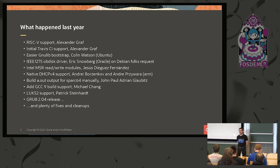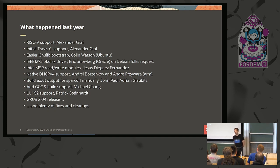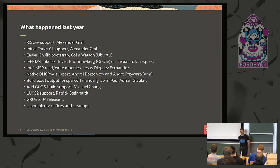What happened last year? Alexander the Grub introduced initial support for RISC-V, and he also introduced initial Travis CI support into Grub. Colleen Watson from Ubuntu finally changed the method of how GNULIB is integrated with Grub. Currently it is much easier and well documented how to update GNULIB, and I think it is the largest change which went into Grub last year.